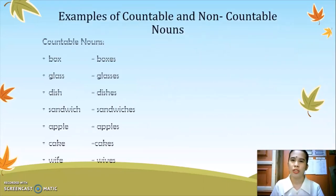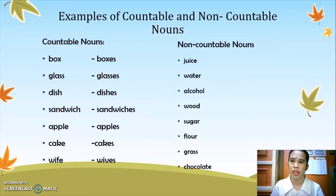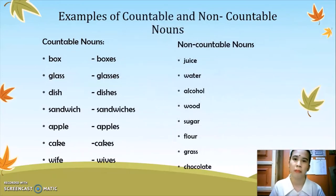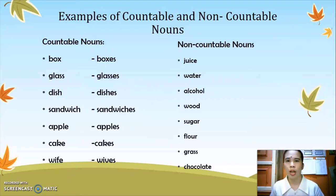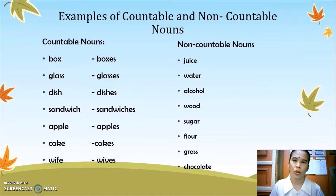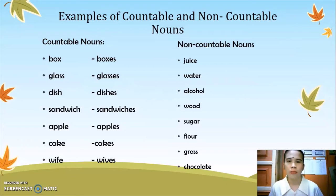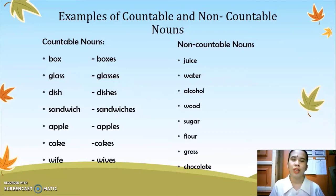These are some examples of countable and non-countable nouns. The countable nouns examples are: box — plural form is boxes; glass — glasses; dish — dishes; sandwich — sandwiches; apple — apples; cake — cakes; wife — and wives. And here are some non-countable nouns: juice, water, alcohol, wood, sugar, flour, grass, chocolate.